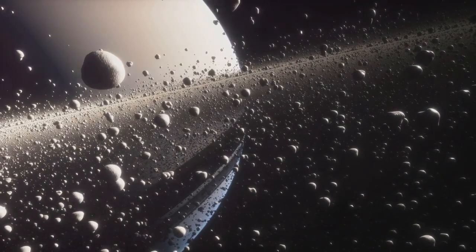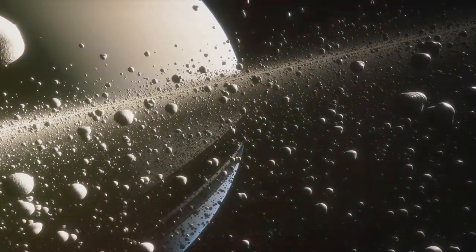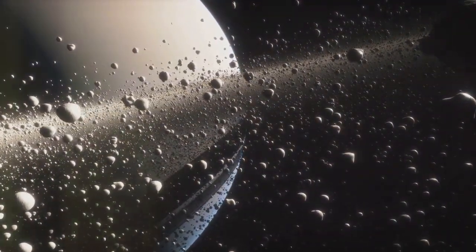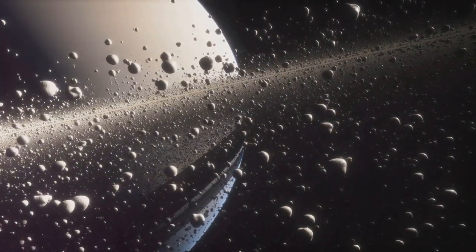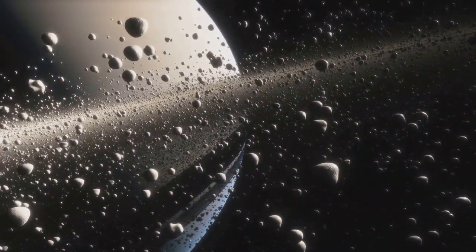Next, we swing by Jupiter, the largest planet in our solar system. Unlike Saturn, Jupiter's rings are faint and mostly composed of tiny dust particles. These particles originate from the planet's four small inner moons, which get bombarded by meteoroids. The dust kicked up from these impacts forms a ring system that's less visible but equally fascinating.